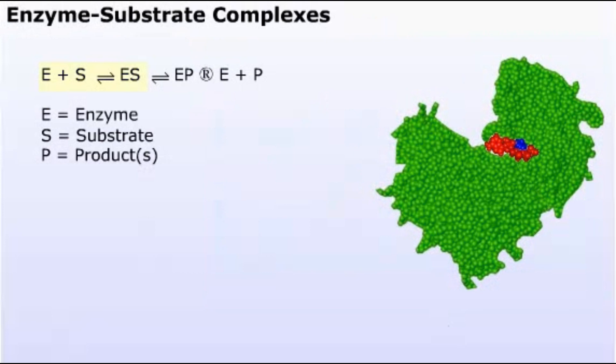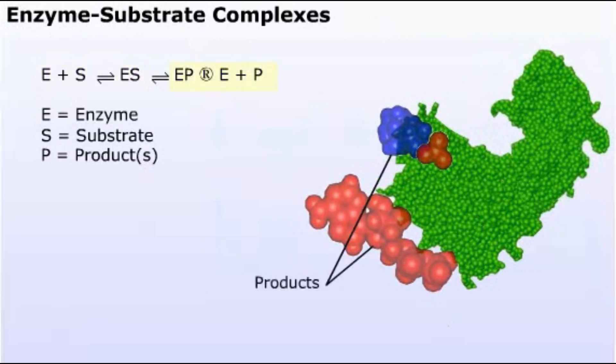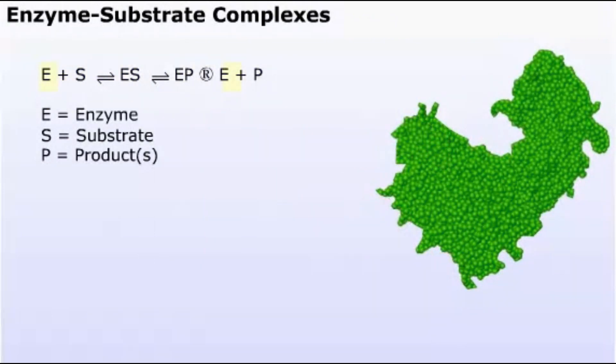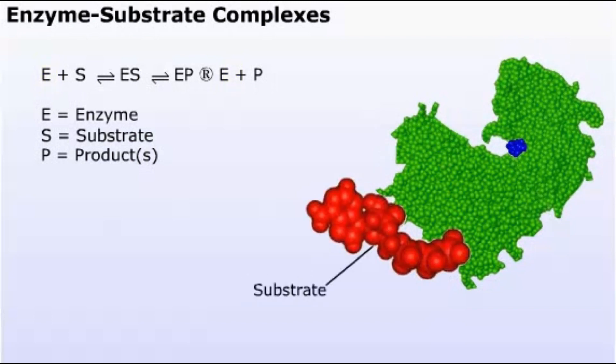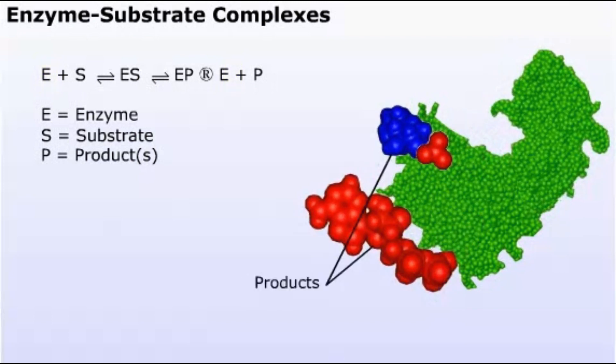Enzymes bind substrates and convert them to products. During the reaction, the enzymes are not changed. One enzyme can convert many substrate molecules into products. Now that we know what enzymes are and what they do, let's learn more about how they do it.